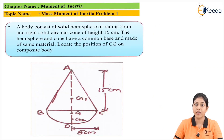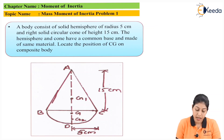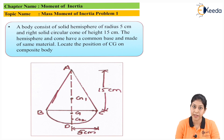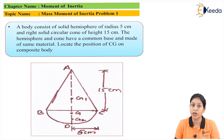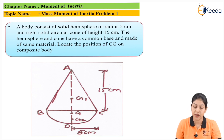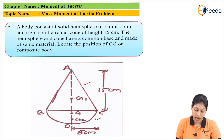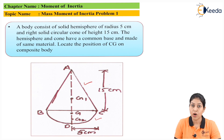The numerical is: a body consists of a solid hemisphere of radius 5 centimeter and a right circular cone of height 15 centimeter. The hemisphere and the cone have a common base and are made of the same material. We have to locate the position of the CG on the composite body, which is made of a solid hemisphere and a solid circular cone.